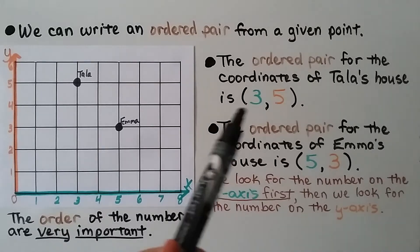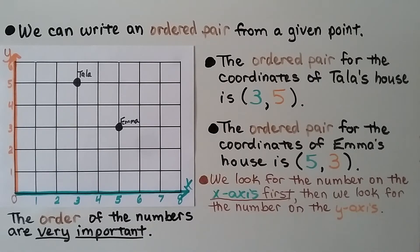We can write an ordered pair from a given point. The ordered pair for the coordinates of Tala's house is 3, 5. The ordered pair for the coordinates to Emma's house is 5, 3. We look for the number on the x-axis first, then we look for the number on the y-axis. And the order of the numbers is very important.